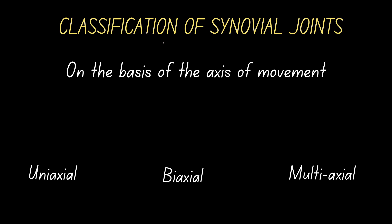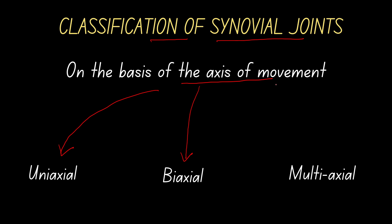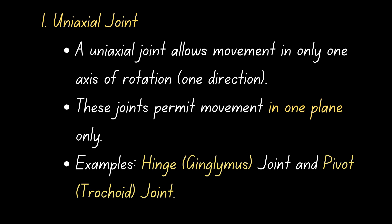We will discuss the classification of synovial joints on the basis of axis of movement. There are three types of synovial joints: uniaxial joints, biaxial joints, and multiaxial joints.